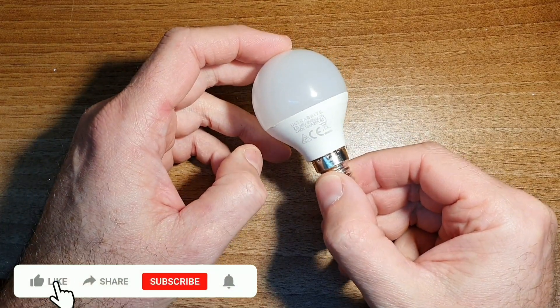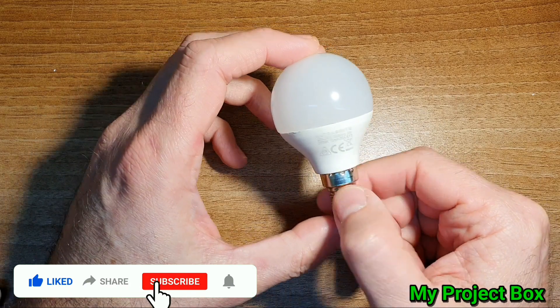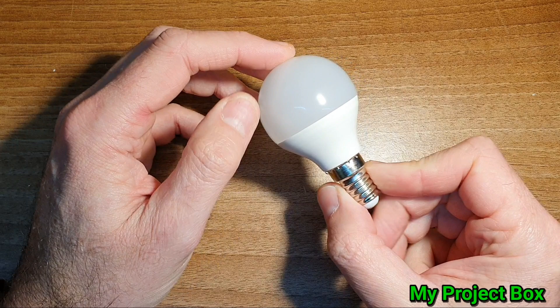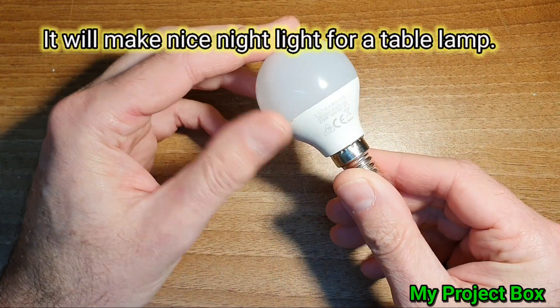In this video I would like to try and convert this LED bulb. It's only a 3 watt one from Poundland. It's non-dimmable and I want to convert it into full-on and a soft nightglow mode.